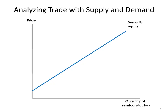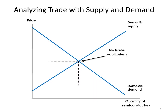Here is the domestic supply curve — this is the supply curve of the home country firms. If we're thinking about the U.S., this is the supply curve from U.S. firms. Here's the demand curve — domestic demand from U.S. consumers. If we had no international trade, we would find the equilibrium where quantity demanded equals quantity supplied, giving us the price and quantity with no international trade.